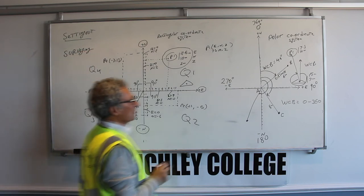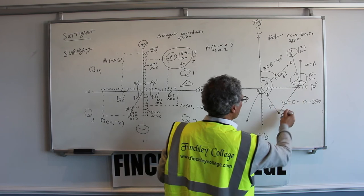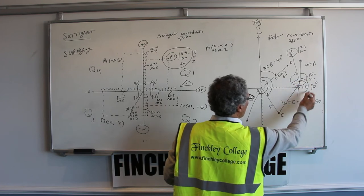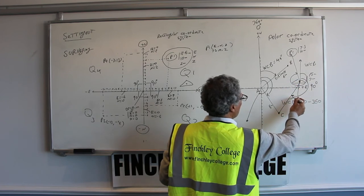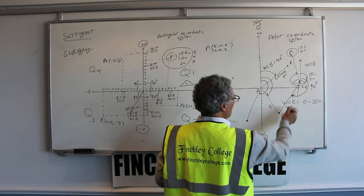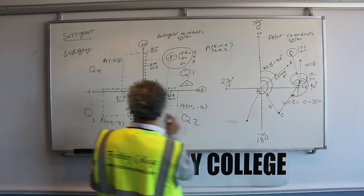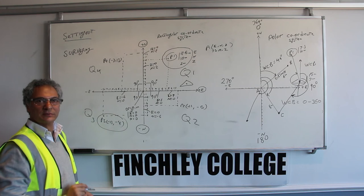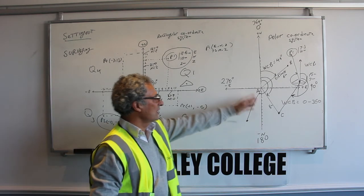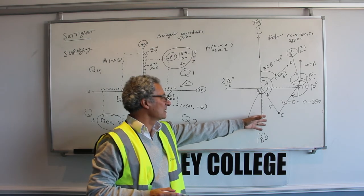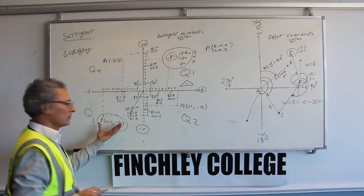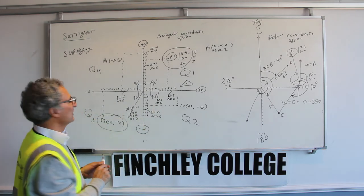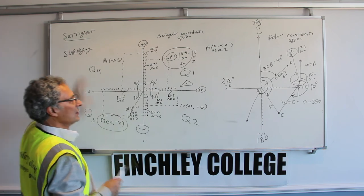When surveying, you do the opposite. You sight to a point, the instrument reads the whole circle bearing and measures the distance, then converts these back and displays the rectangular coordinates of that point. So you're always using both systems simultaneously — depending on whether you're doing setting out or surveying.